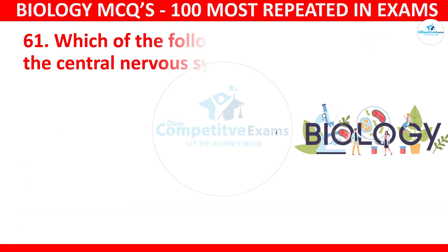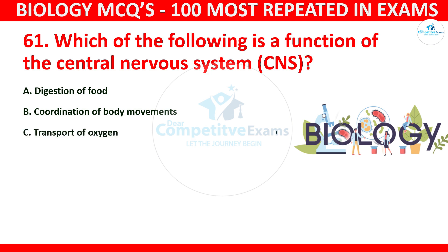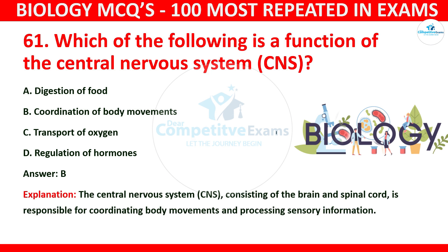Question number 61: Which of the following is the function of the central nervous system (CNS)? The options are digestion of food, coordination of body movements, transport of oxygen, or regulation of hormones? The correct answer is B: coordination of body movements. The central nervous system, consisting of the brain and spinal cord, is responsible for coordinating body movements and processing sensory information.